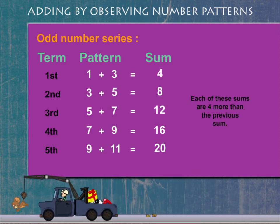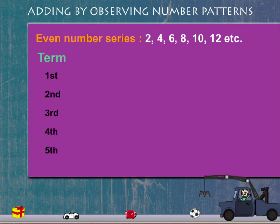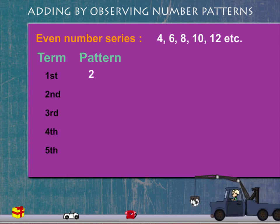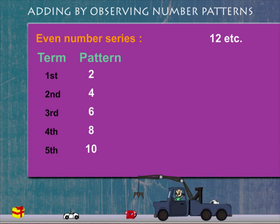Let's now look at the even number series: 2, 4, 6, 8, 10, 12, etc. The pattern is 2 is the first term then 4, 6, 8 and so on.